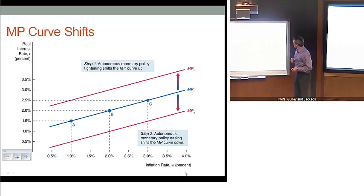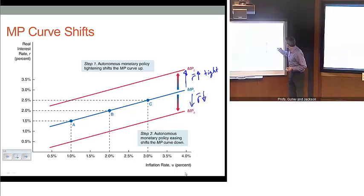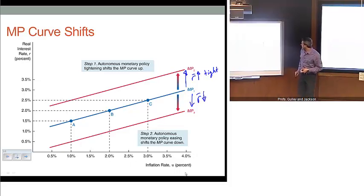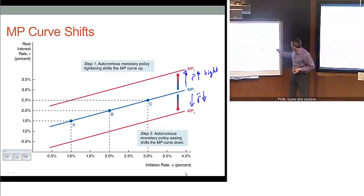Visually, you can see some examples here. We have this autonomous tightening of policy, so that MP curve shifts up when R bar goes up. That's a tightening. Alternatively, we have this autonomous easing policy where we move to the MP3 curve. That means that interest rates are falling, holding inflation constant. Because of that, cost of borrowing is easier, so that would be an expansionary type of policy.